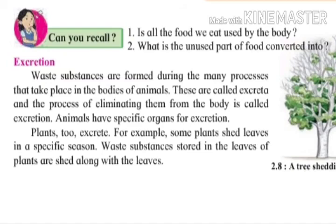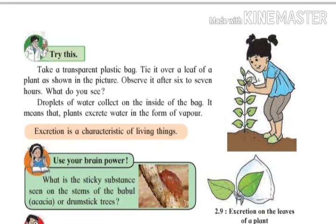To prove that plants also excrete, take a transparent plastic bag and tie it over a leaf of a plant, as shown in the picture. Observe it. After six to seven hours, you will see droplets of water collected on the inside of the bag. It means that plants excrete water in the form of vapour. And it is proved that excretion is a characteristic of living things.